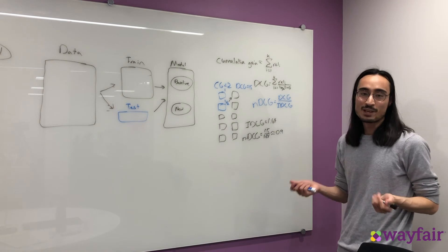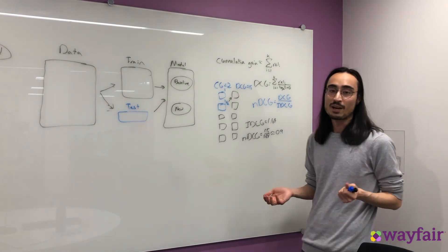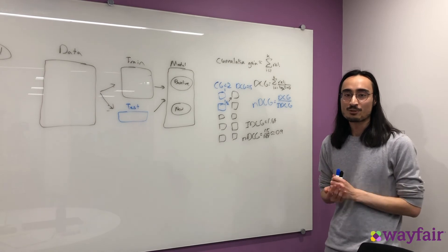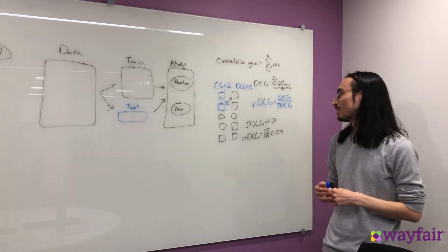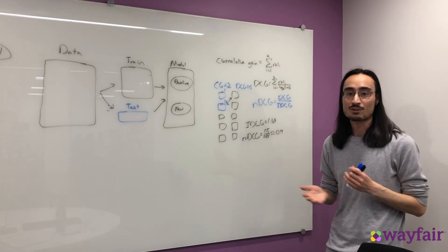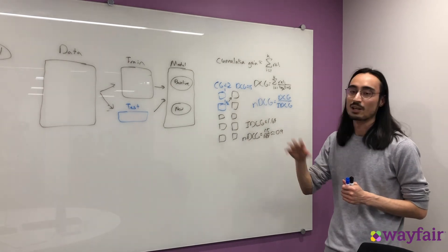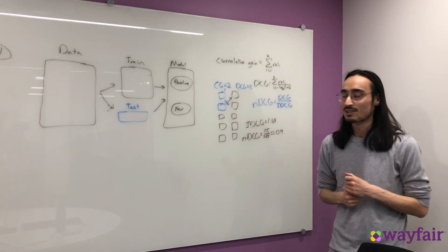The main advantage between using NDCG and DCG is that it allows us to better compare these evaluation metrics between customers. The idea is that certain customers might be more difficult to score than others. So it gives us the effect of normalizing our DCG scores to be a value between 0 and 1, which is really nice.